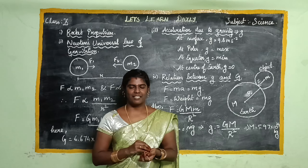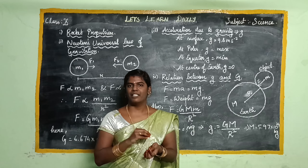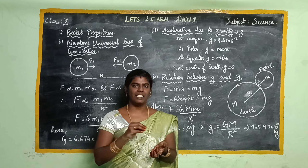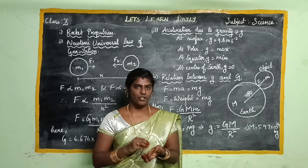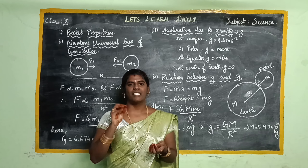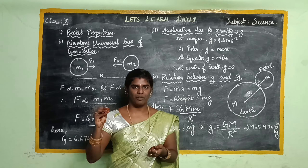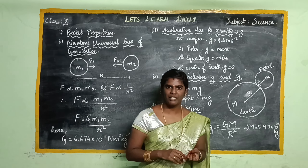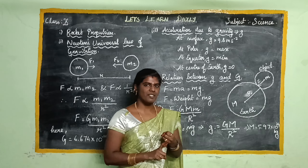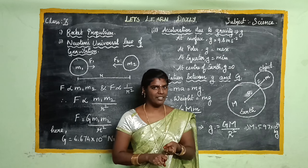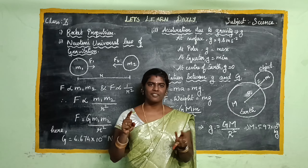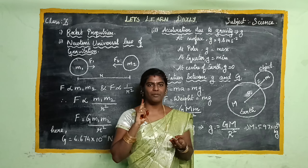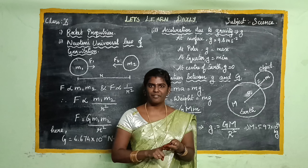The escape velocity is 11.2 km per second. The rocket overcomes the Earth's gravitational pull at this velocity.